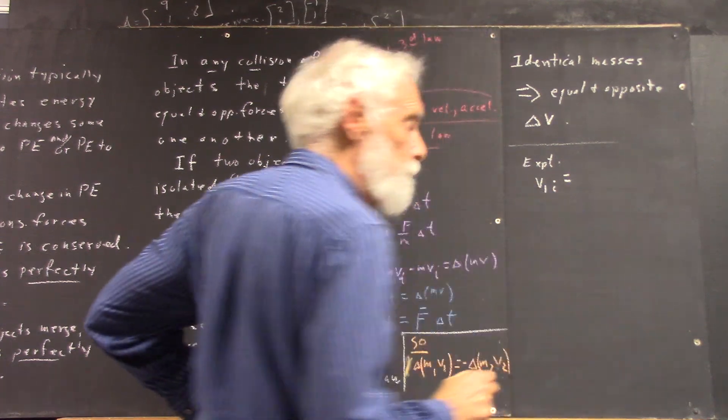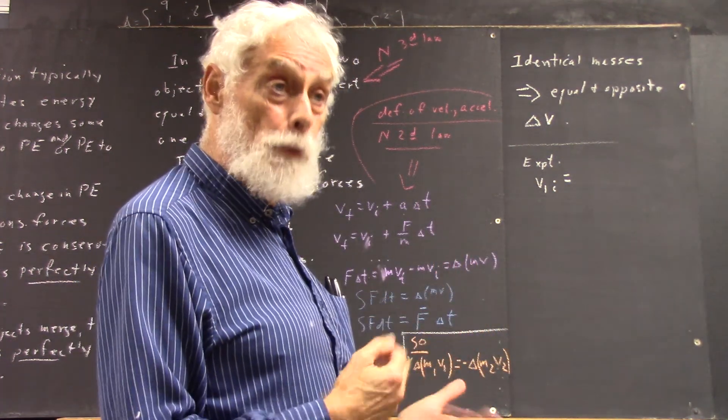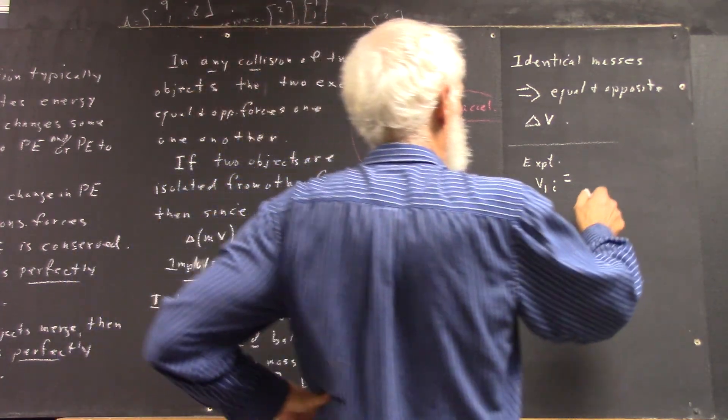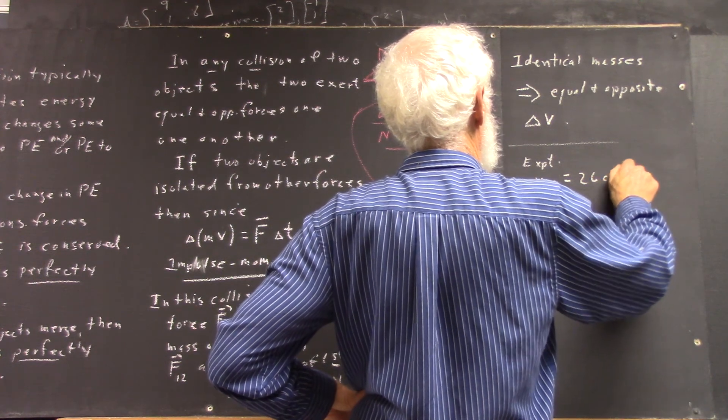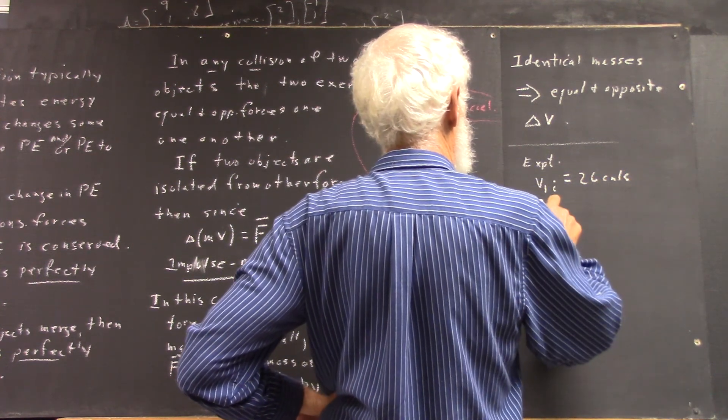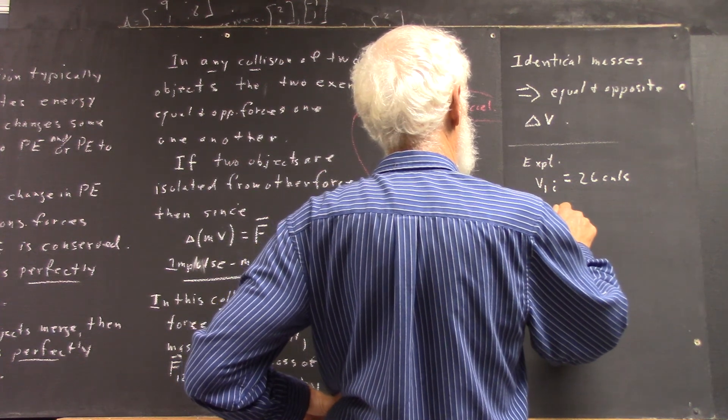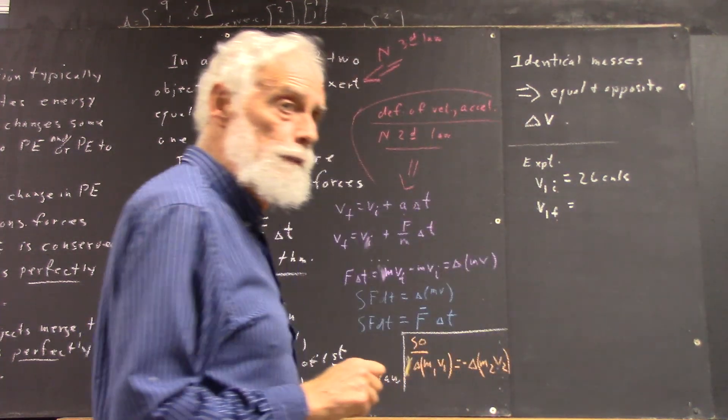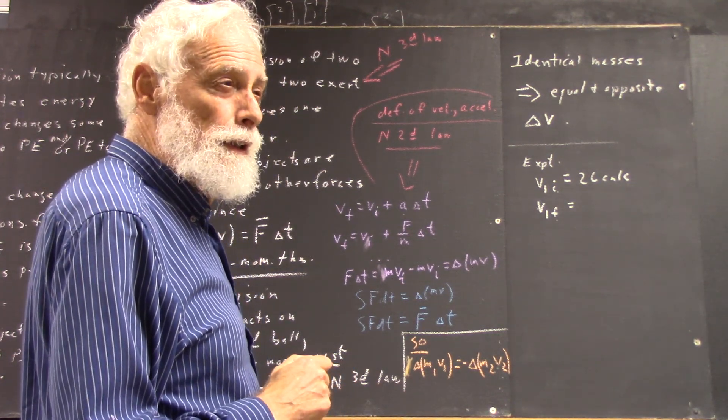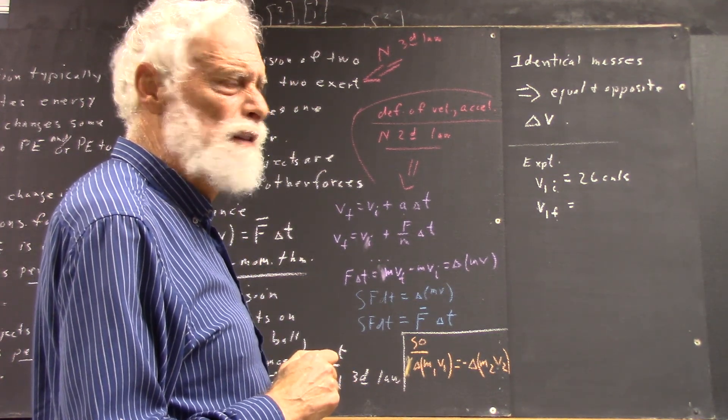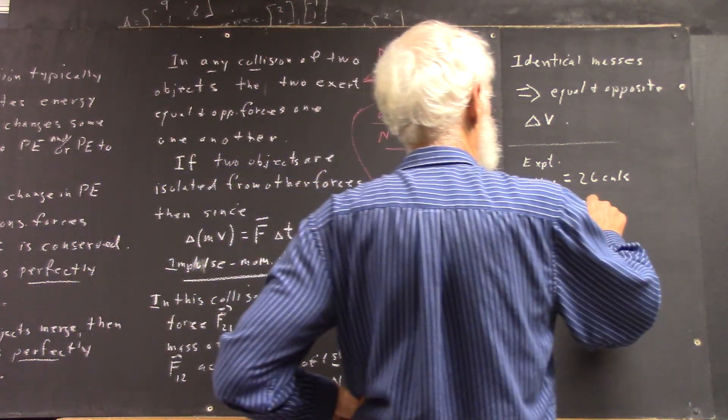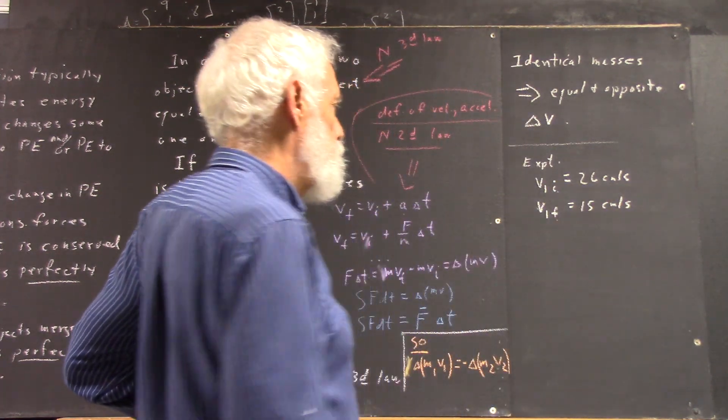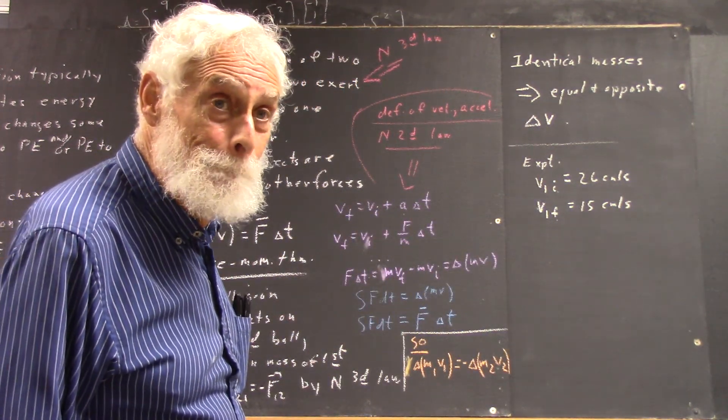V1 initial. That's a velocity of the first ball before collision. And I think we're getting something like 26 centimeters per second. And then V1 final. In other words, V1 after the collision. I think it dropped to, like, 15 centimeters per second, right? Something like that?